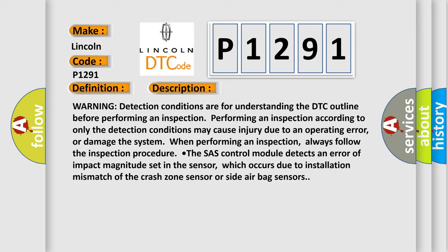The SAS control module detects an error of impact magnitude set in the sensor, which occurs due to installation mismatch of the crash zone sensor or side airbag sensors.